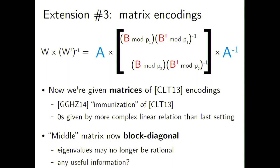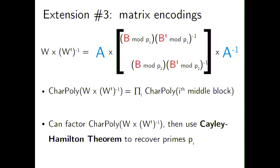The third extension handles the case where we're given matrices of CLT13 encodings, and zeros require arithmetic on those matrices — the immunization proposed by Garg et al. Here we get zeros via more complex linear relations, and the middle matrix is block-diagonal rather than diagonal. Eigenvalues may not be rational, so the ratio trick doesn't directly apply. However, the characteristic polynomials are still recoverable, and using the Cayley-Hamilton theorem we can still recover the primes. Details are in the paper.